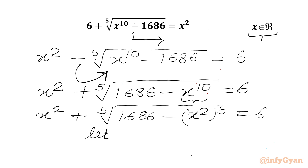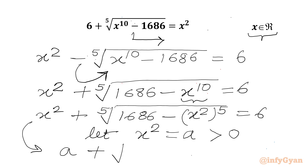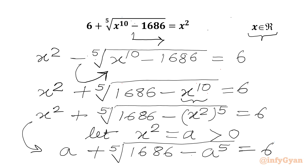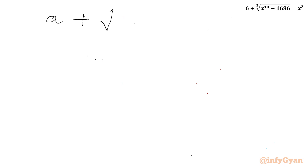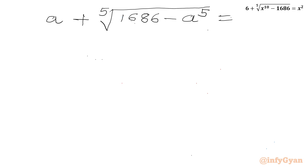Now we can easily consider x squared equal to a. For x to be real, a must be positive. So our equation becomes a plus the fifth root of (1686 minus a to the power 5), and we set this equal to 6.